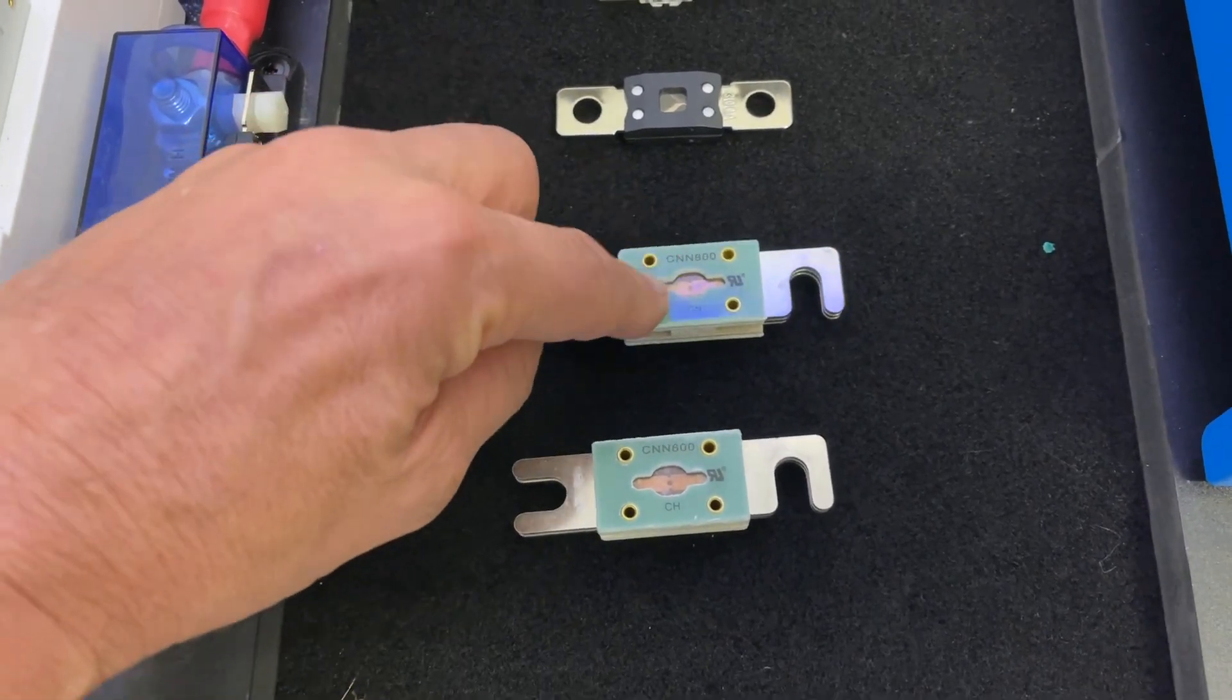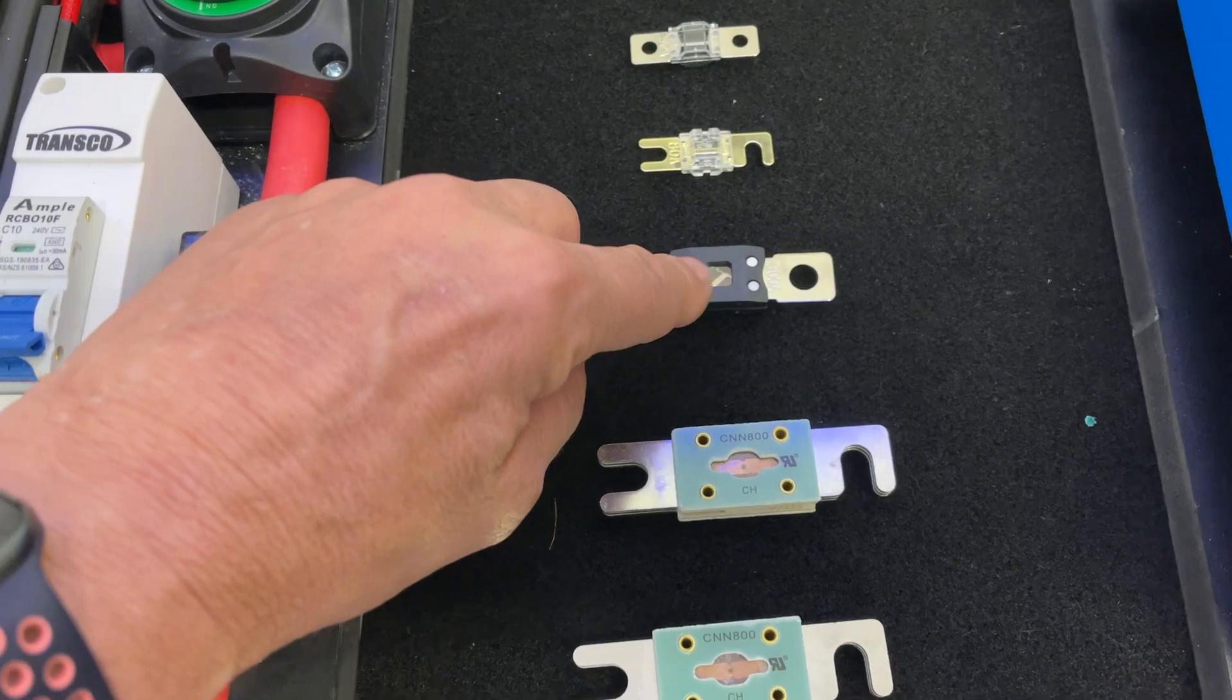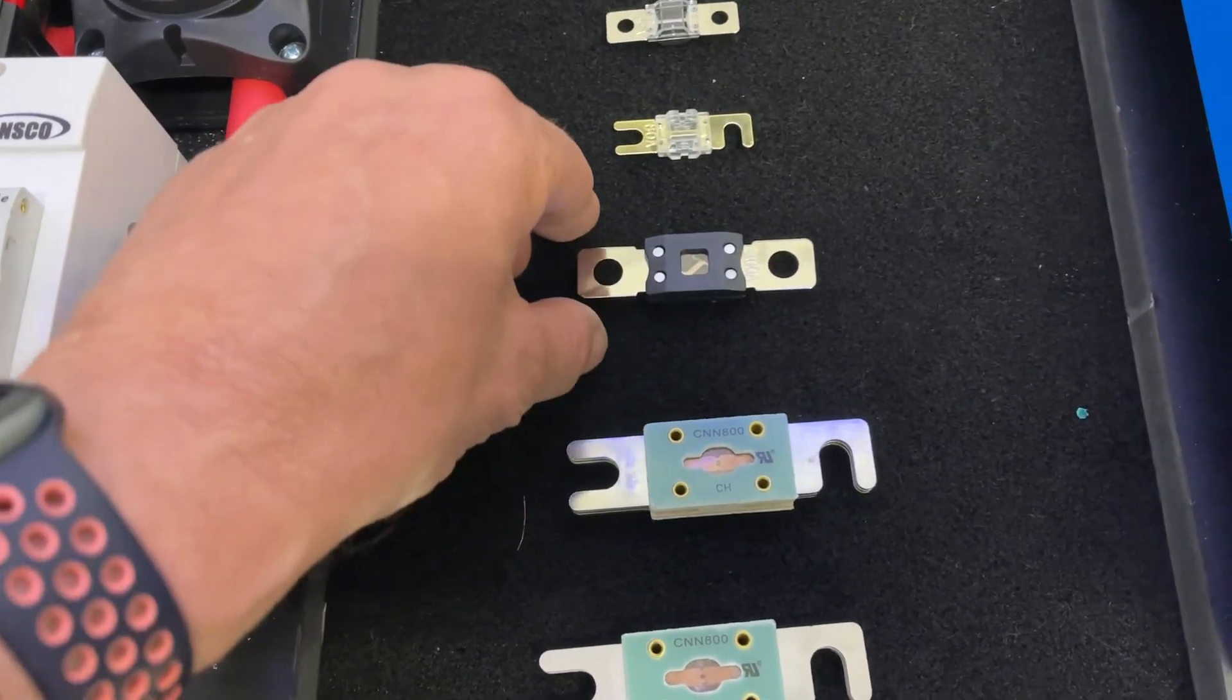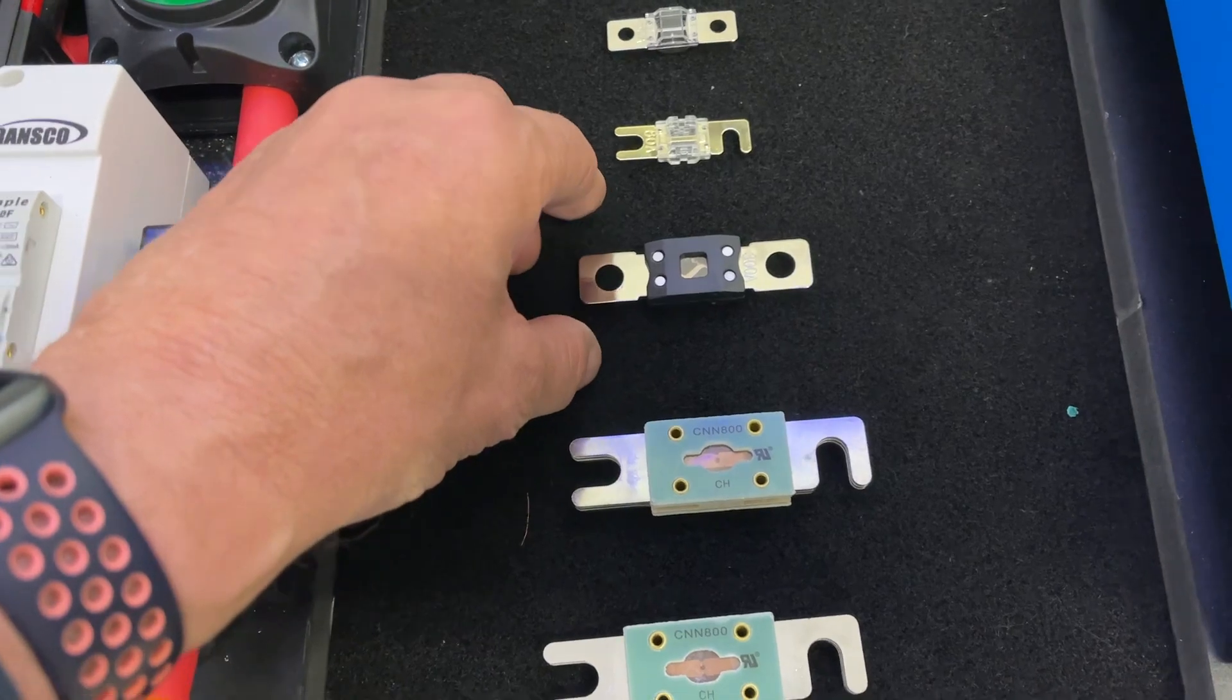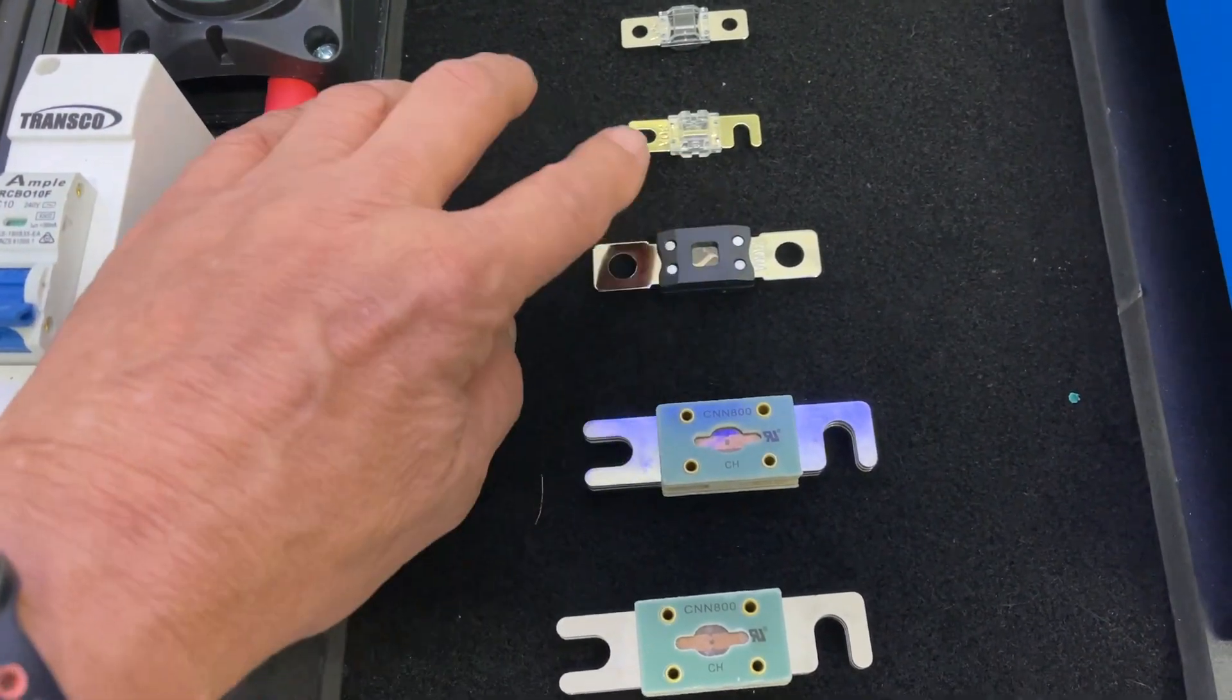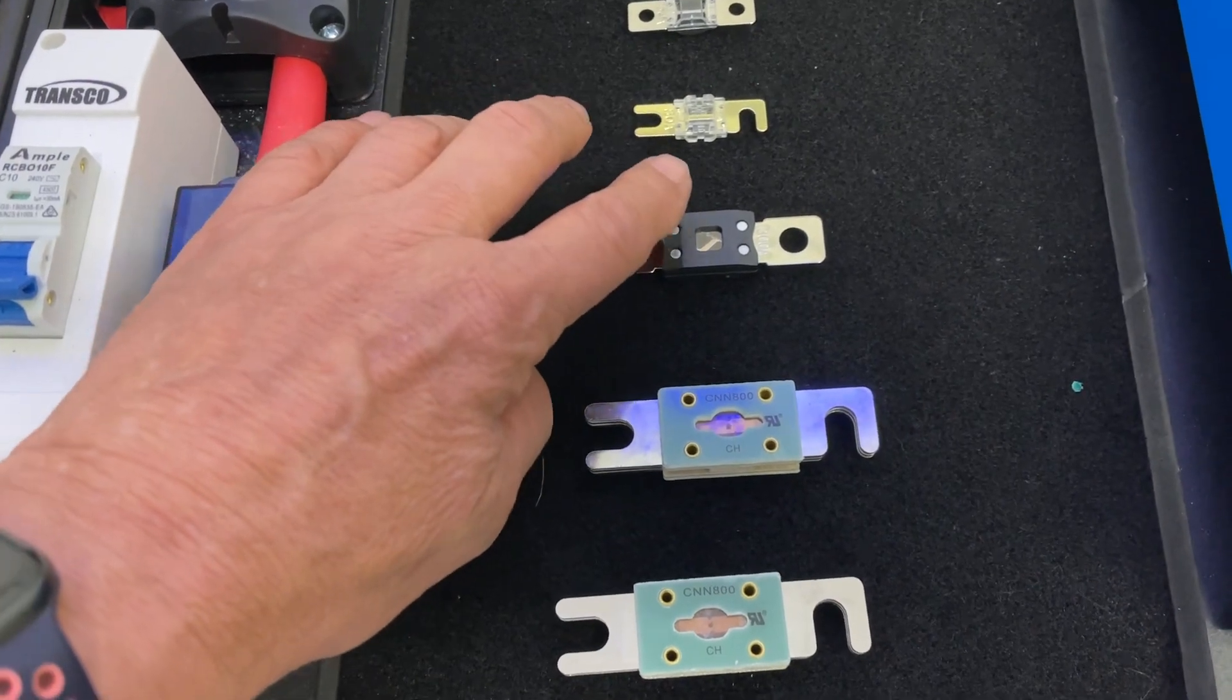When a regular fuse blows, you get stuff flying out everywhere. In a boat that's in survey, you can't have any chance of fire or explosion in the engine room.